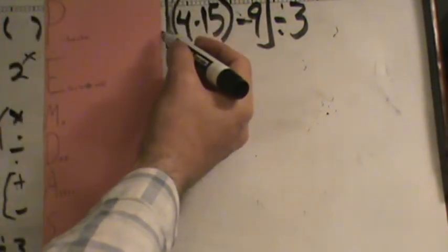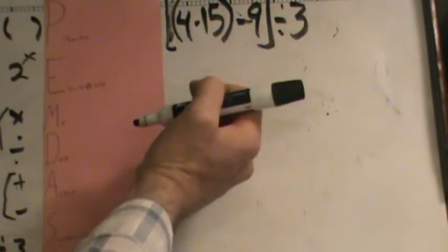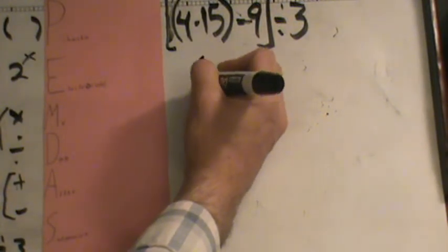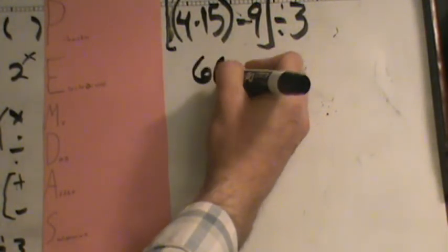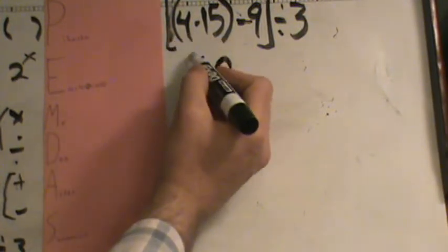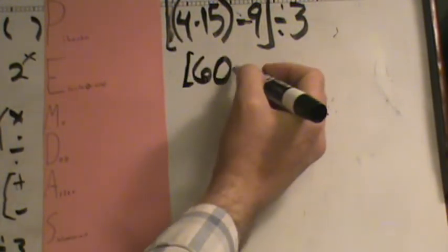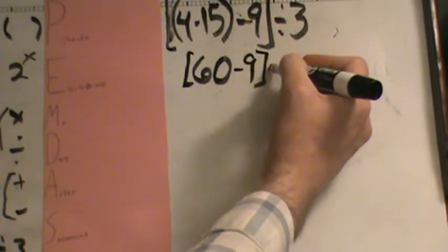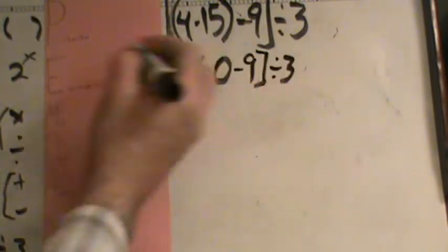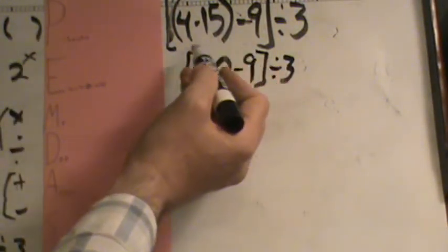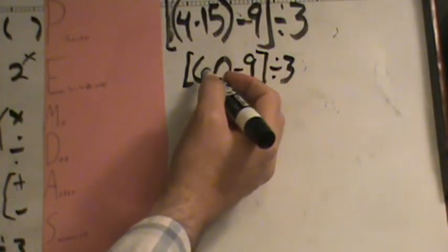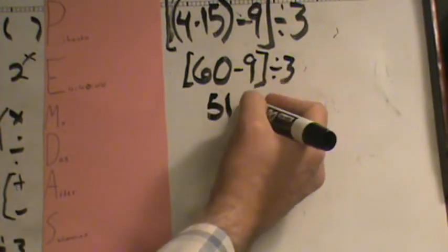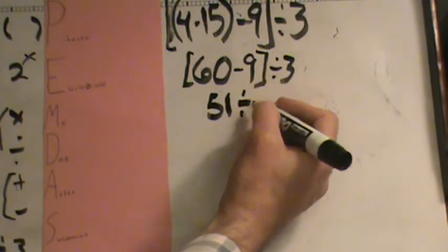Are there any parentheses inside the grouping? And there is, 4 times 15. So we say 4 times 15, we had already figured that out, is 60. And then we're dropping everything we didn't use, which includes the brackets. So drop the bracket, drop the 9, drop the bracket, drop the divided by 3. And now we start over. Is there anything in parentheses or groupings? Yes. And there is. So 60 minus 9 is 51. And we drop down everything we didn't use, divided by 3.